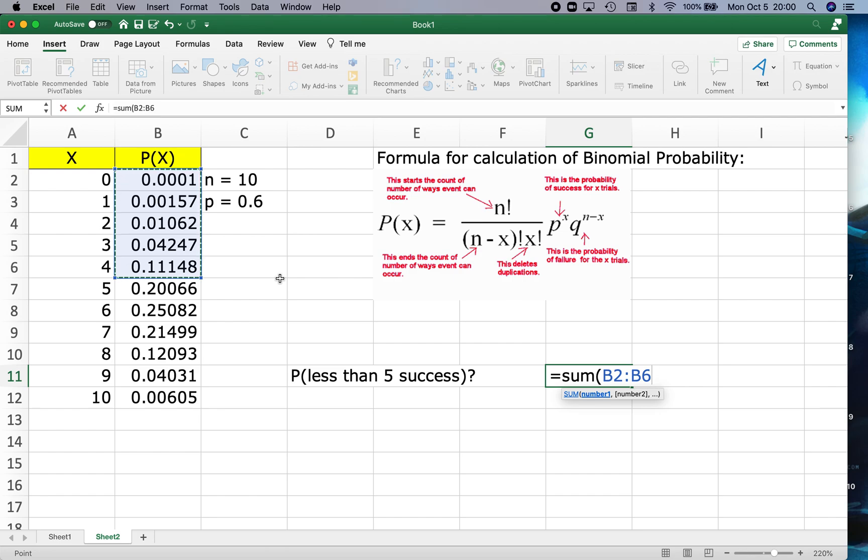Which is 0.1662, so approximately a 16.6% chance that I have less than 5 successes in this experiment. And I can answer any other question about the binomial based on this table.